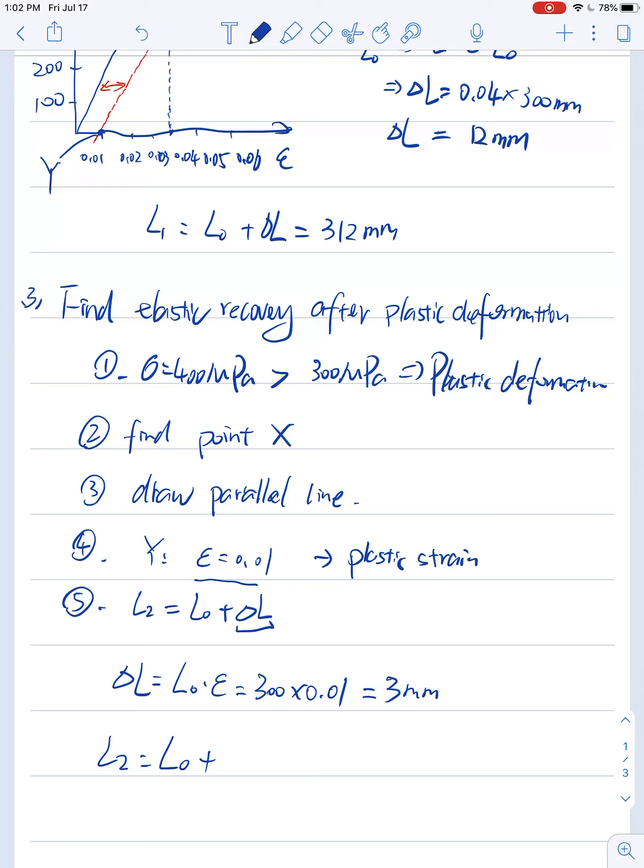Therefore, L2 equals L0 plus delta L equals 303 mm. And this will be the answer for the total new length of this copper-based alloy after the stress is released.